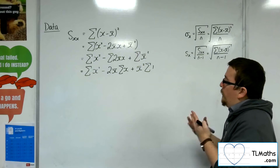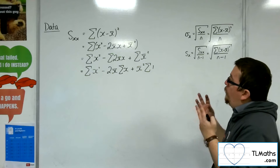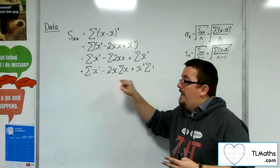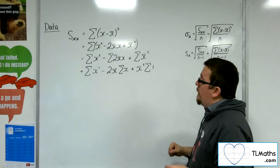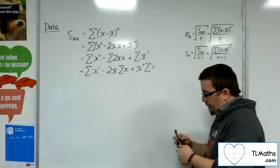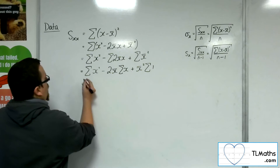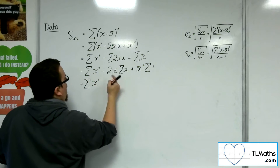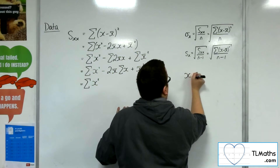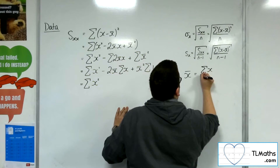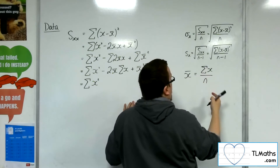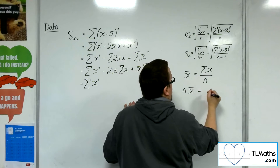Now I'm going to look at what this summation of x actually is, and what this summation of 1 actually is — I can't do anything with the summation of x squared, that's got to stay as it is. For the summation of x: I know that x-bar, the mean, is the sum of the x's divided by n. So that means the summation of x, if I multiply up by n, is the same as n times x-bar.